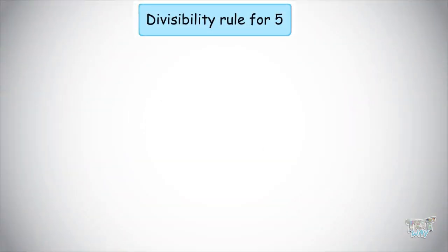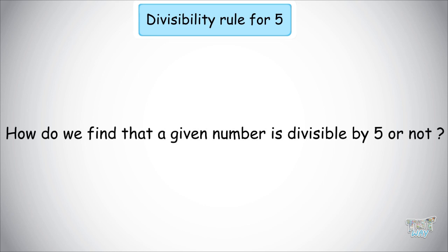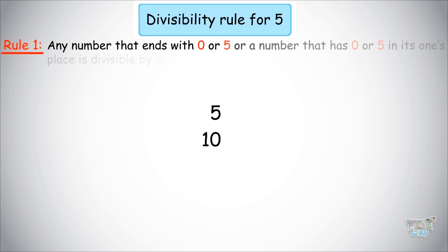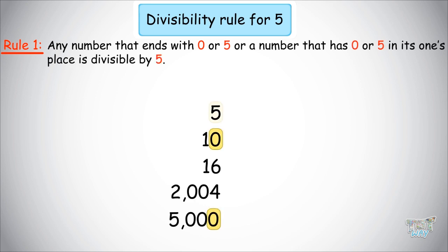We will be starting with number 5. How do we find that a given number will be divisible by 5 or not? It is a very simple rule. Any number that ends with 0 or 5, or a number that has 0 or 5 in its ones place, will be divisible by 5.